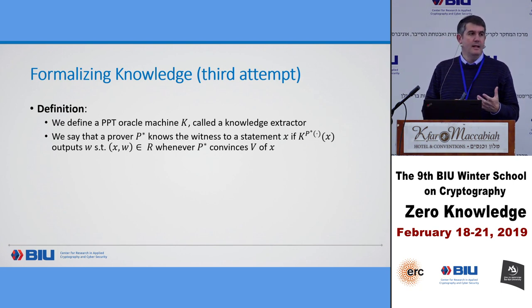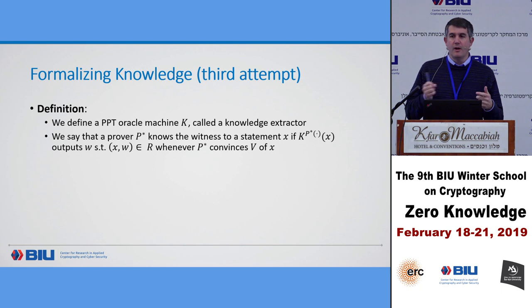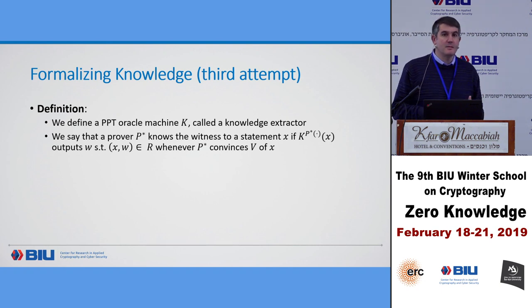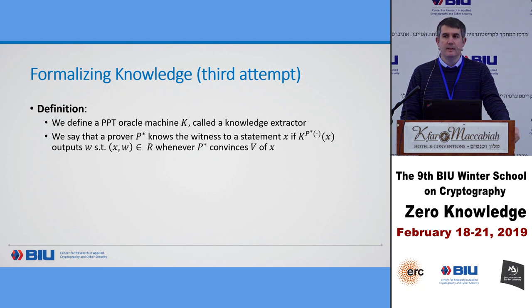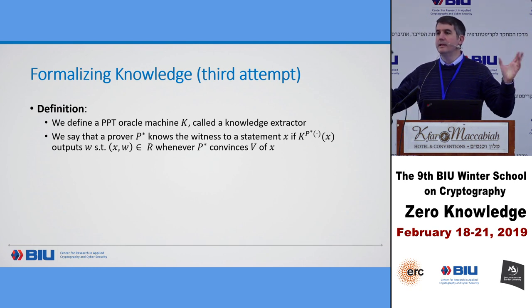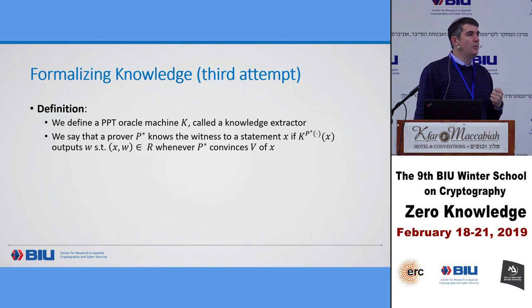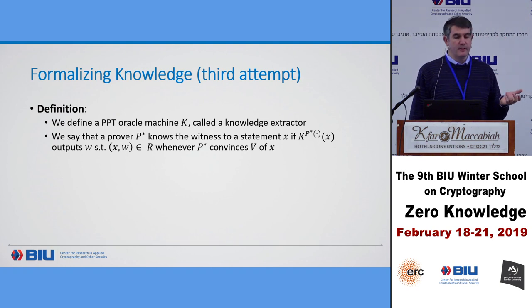It might be that I can convince you with some probability. If I did one round of Hamiltonicity, I can prove anything with probability one half — I don't need to know anything; I just try to play the simulator. So does that mean I know anything? No. What we say is that we want this knowledge extractor K to be able to output a witness with approximately the same probability that the prover can convince the verifier — because there may be some probability that you can just guess or have good luck.